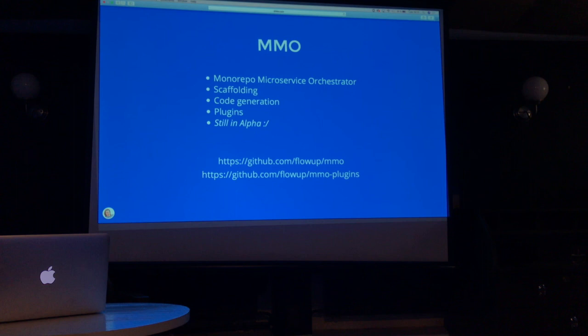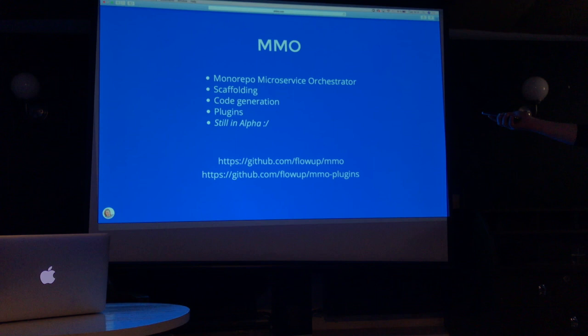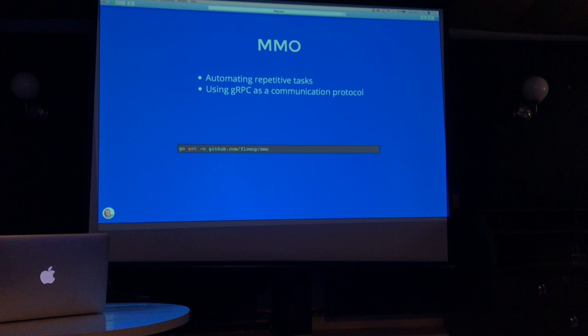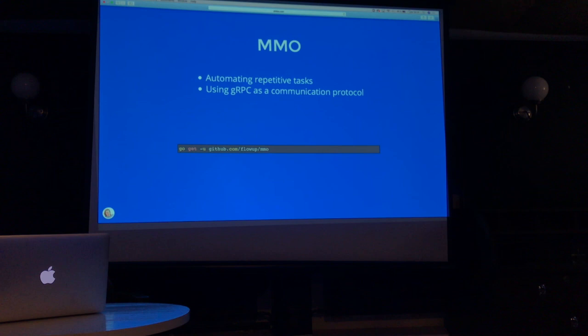One thing is it's still in alpha, so we will accept any issues — you can post them in the repos. The first one is for MMO, the second one is for plugins that I will show. So if you have any issues, just post them there and we can handle them. We wanted to automate everything that's repetitive in our code, which means changing something in the API doesn't mean we need to manually update all the APIs everywhere. We're using gRPC as a communication protocol for now, which means that all the microservices you generate through MMO will, by default, use gRPC.